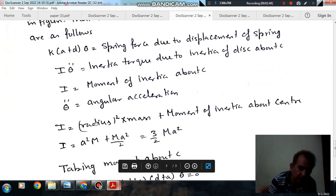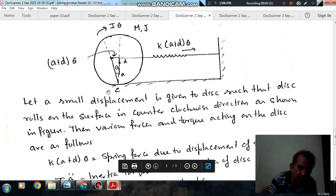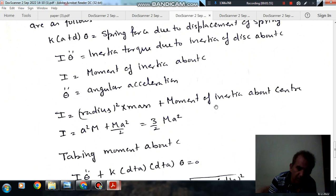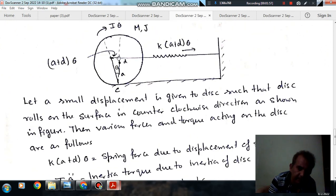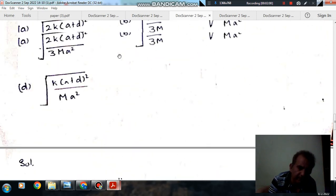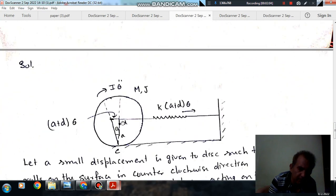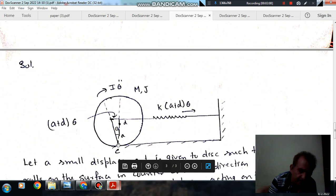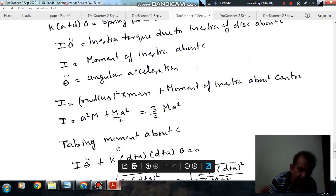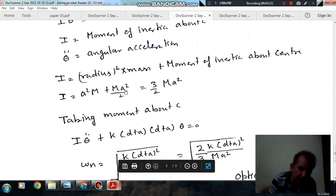θ̈ is angular acceleration. Now I is moment of inertia about point C, and it is equal to mass moment of inertia about center, that is given as mA²/2, plus the distance between point C and center, which is A, squared times m, by using parallel axis theorem.